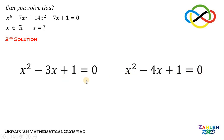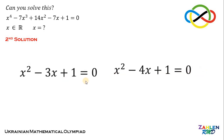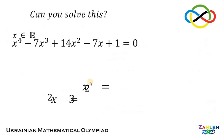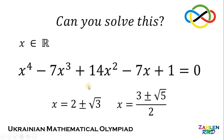Notice that these two equations are exactly the same ones we already solved in our first solution. Therefore, the four real values for x are x equals 2 plus or minus square root of 3, and x equals 3 plus or minus square root of 5 over 2. And as always, we are done.